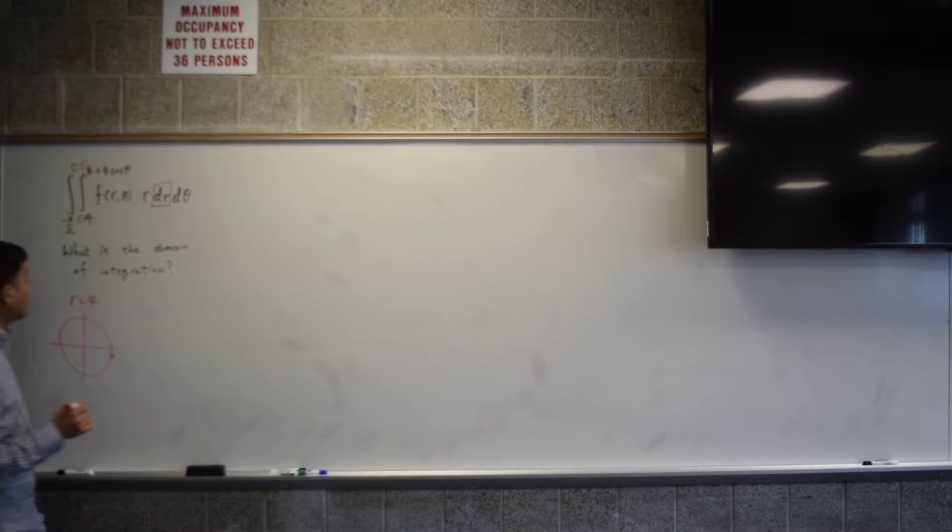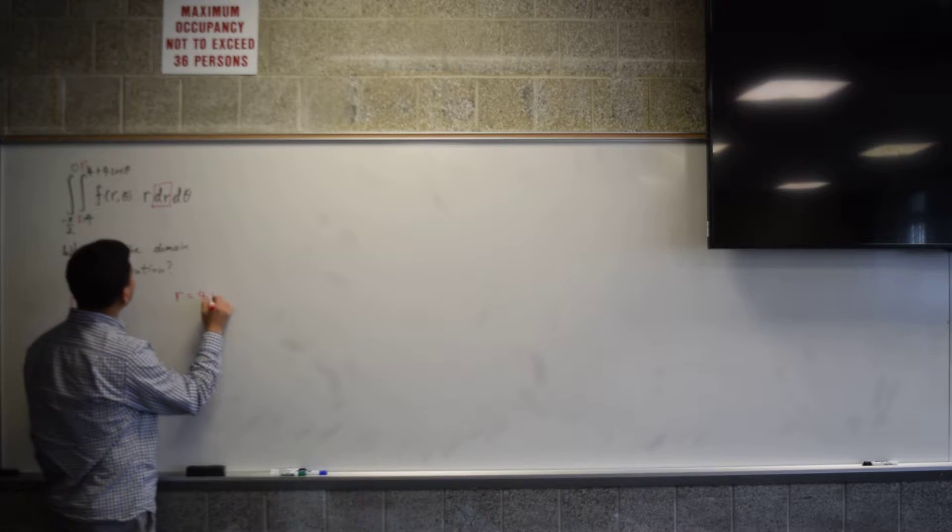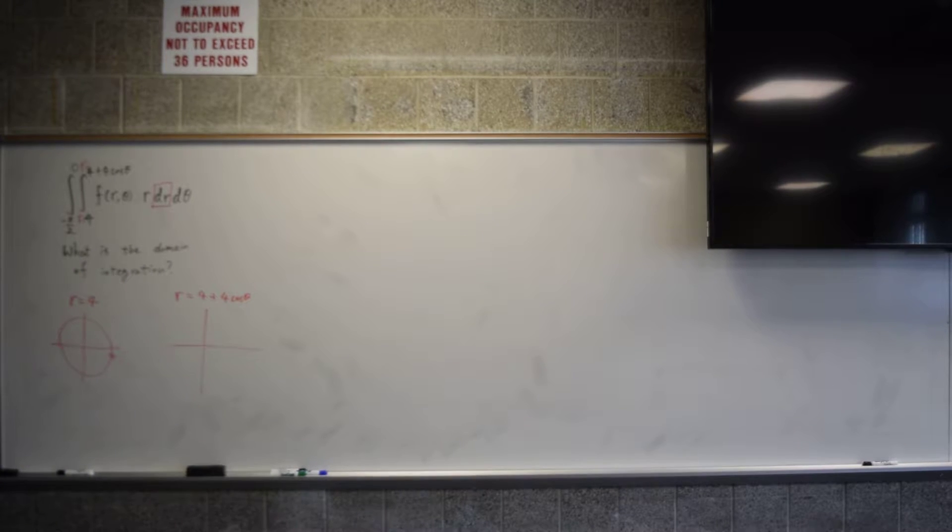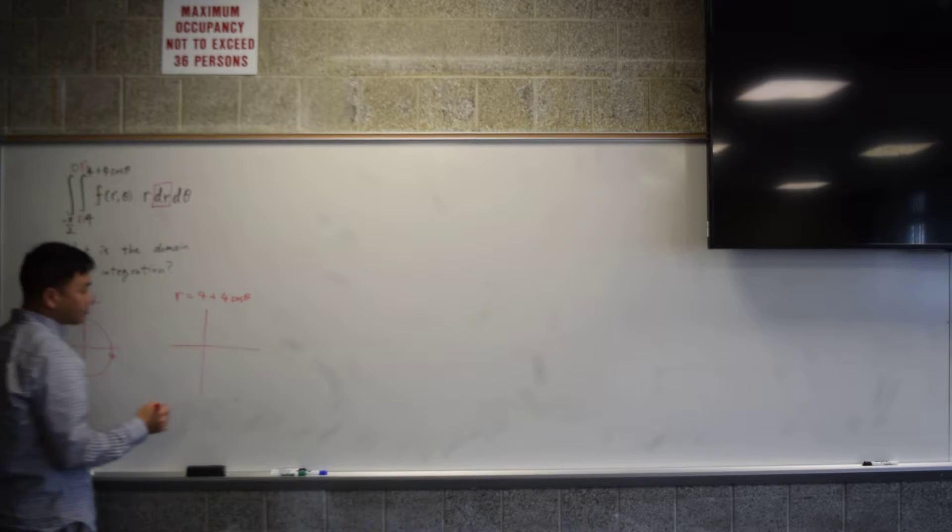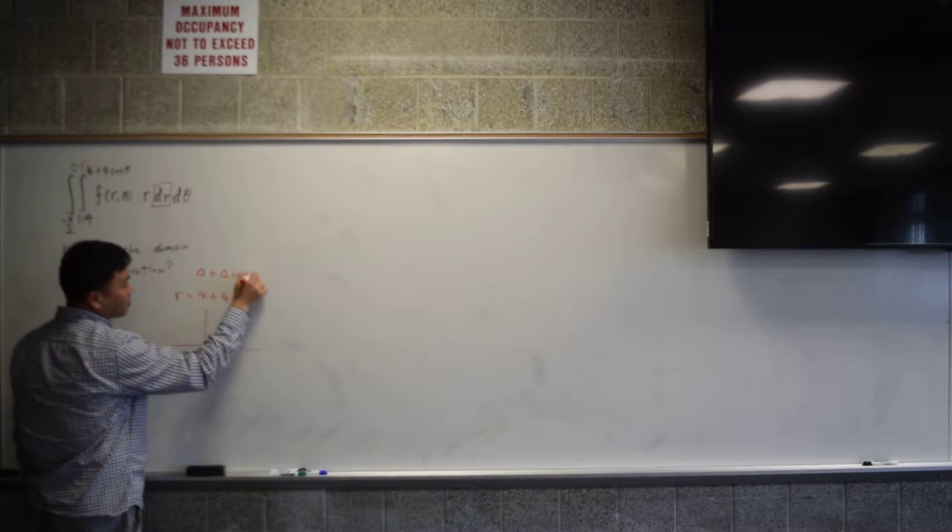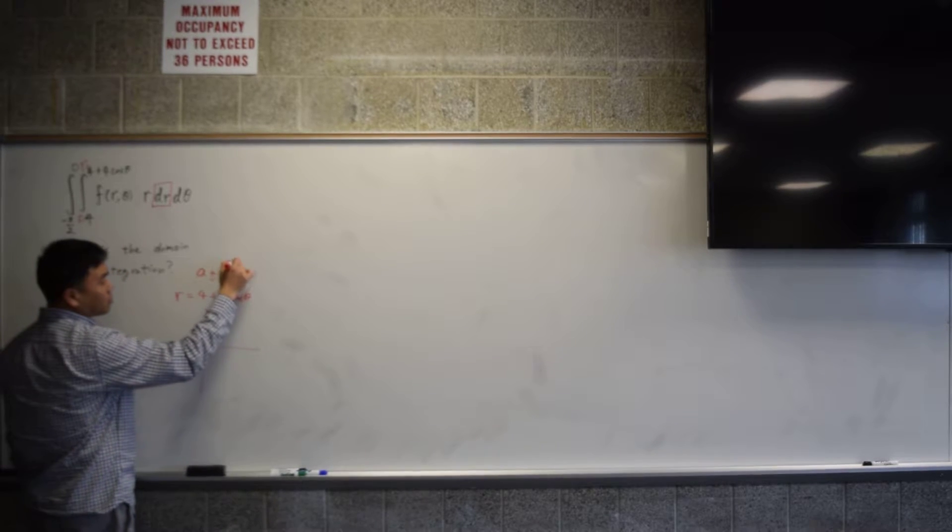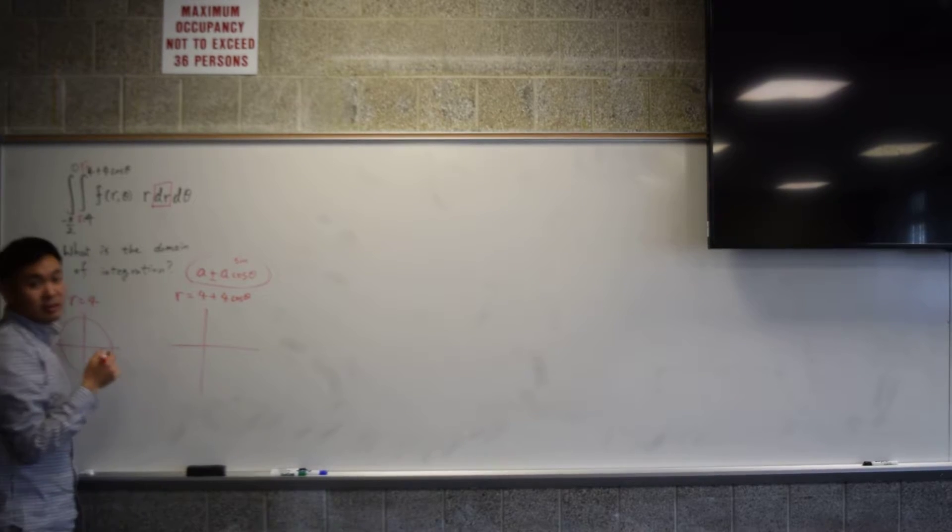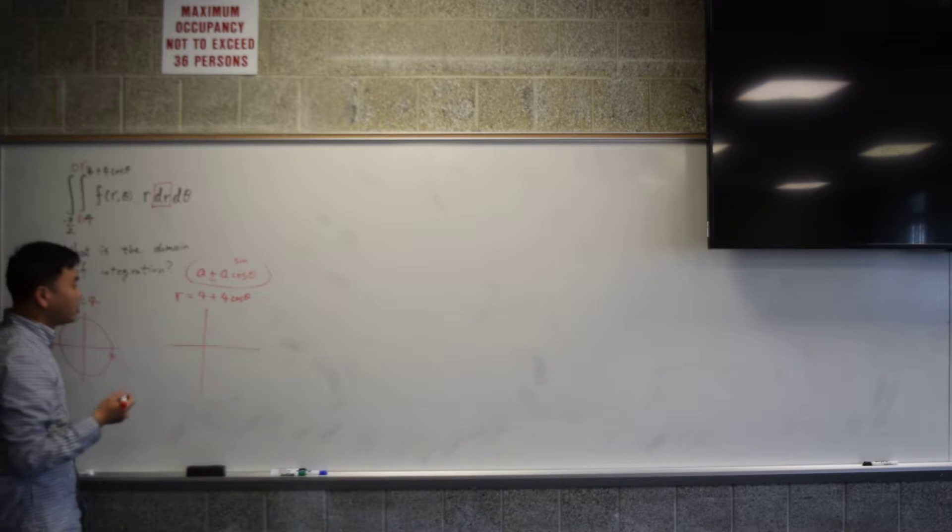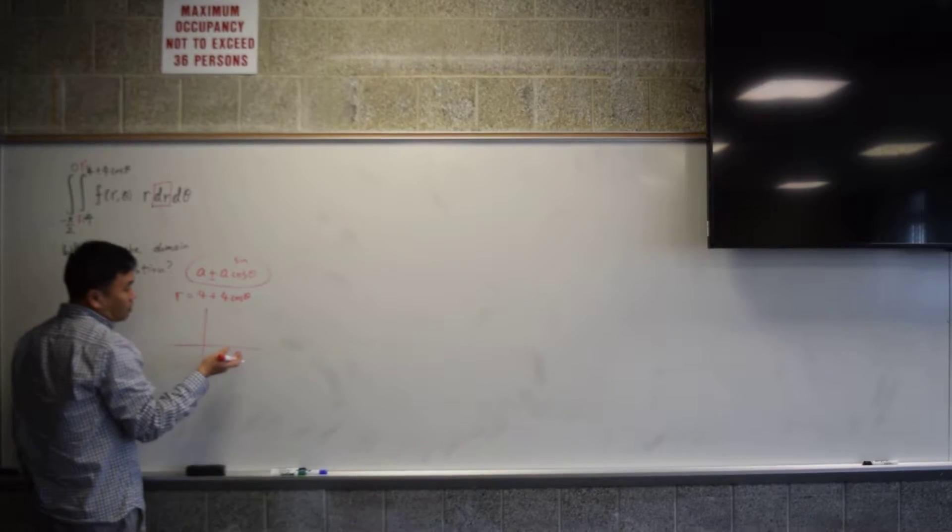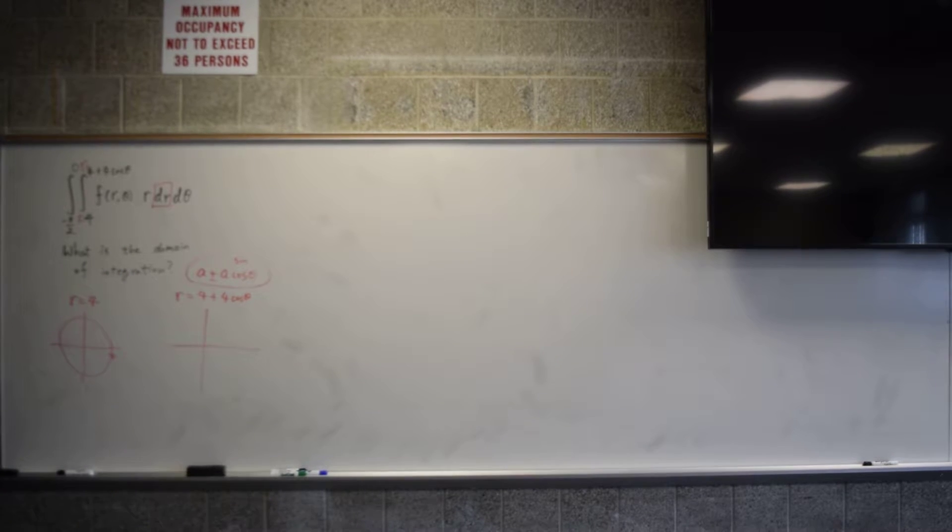Okay, now the next question is what is r equals to 4 plus 4 cosine theta? Well, I know that in general if it's a plus a cosine theta or a minus a cosine theta, it could also be sine, sine and cosine. These types are what? Cardioids. These are cardioids. So I know it's a cardioid, but knowing it's a cardioid is not enough, you should plot a few points to figure out what kind of graph it is.